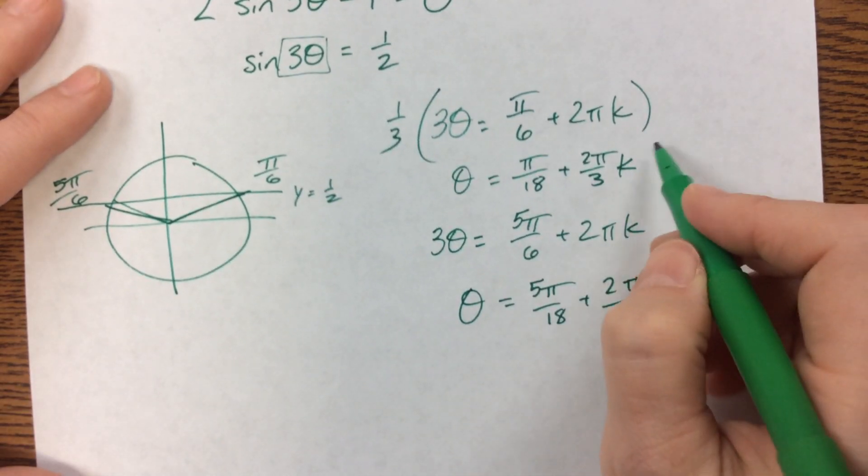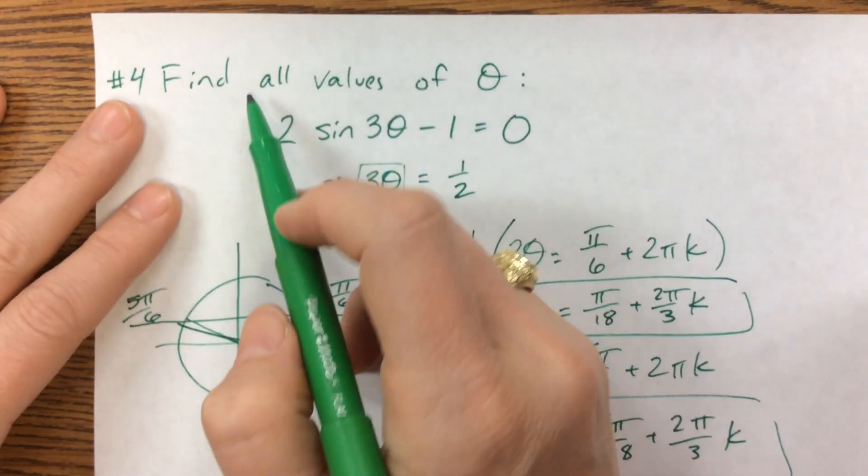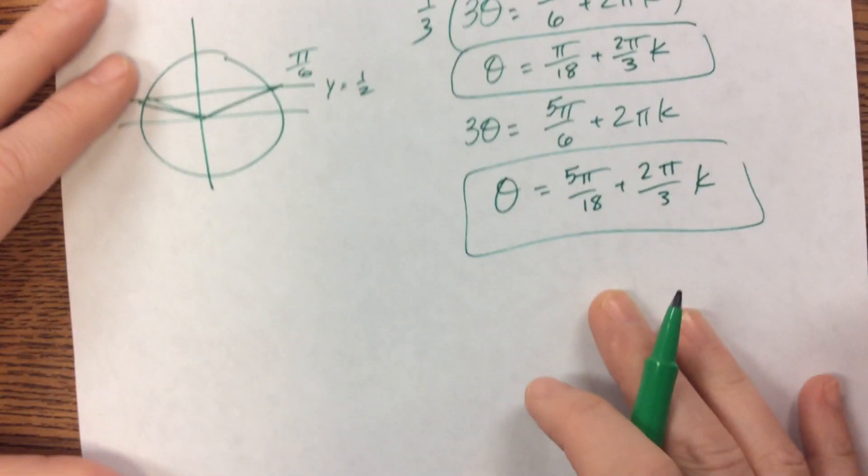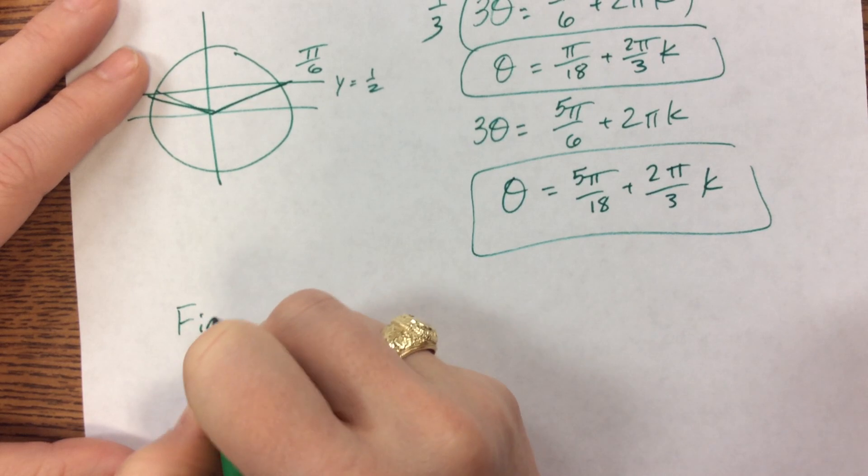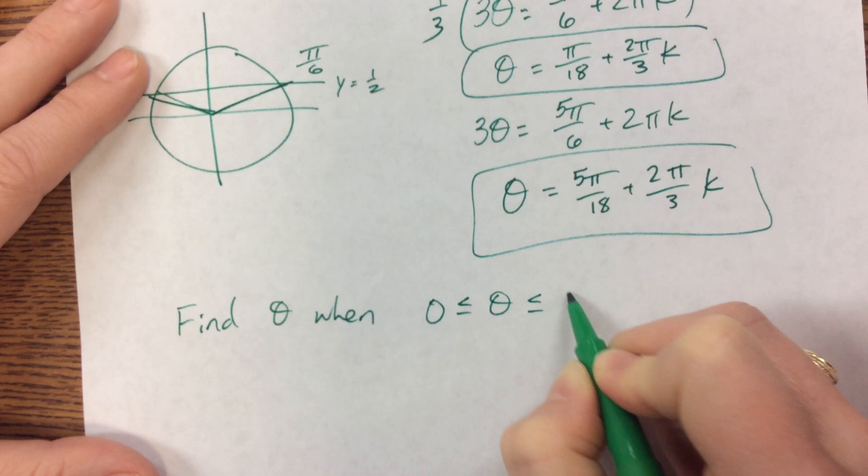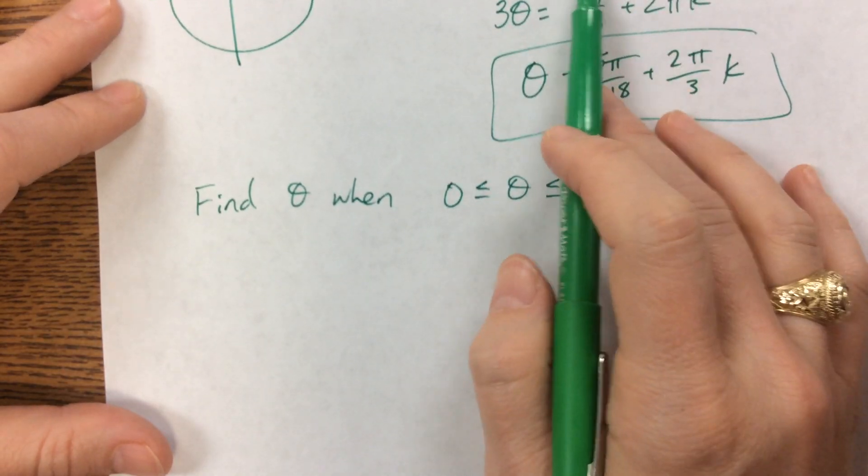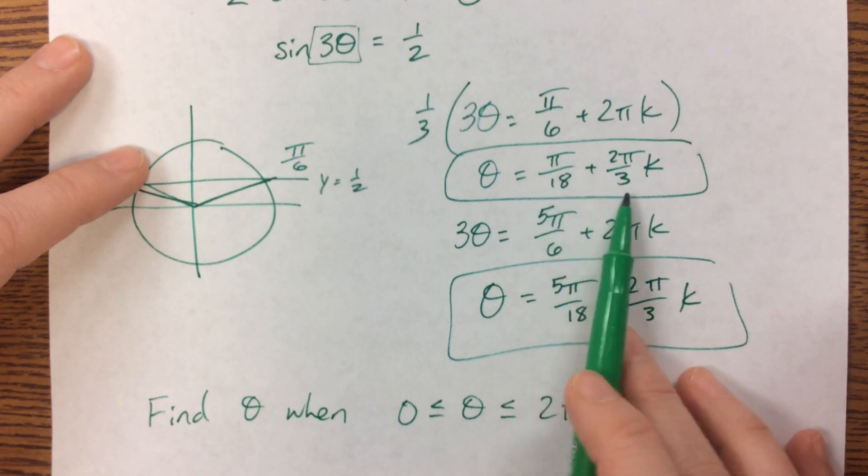This one gets, so this part and this part would be our answer when it says find all values. Sometimes, though, they'll say find theta when 0 is less than or equal to theta, which is less than or equal to 2 pi. If they do that, then you have to kind of move around and get all the possible answers.